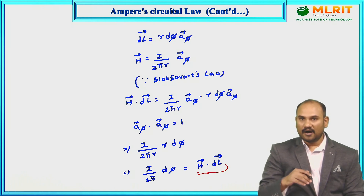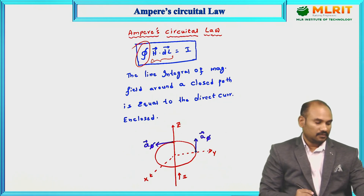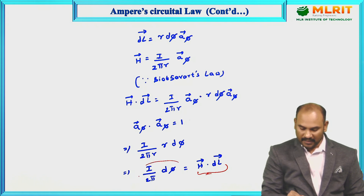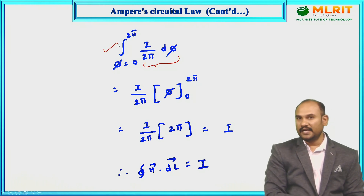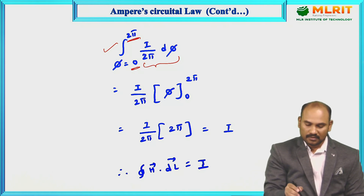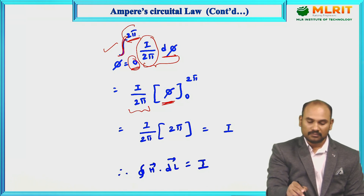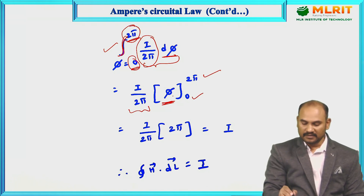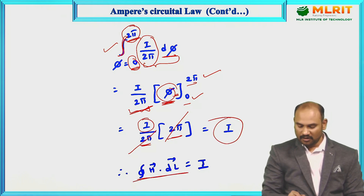The work does not end at H · dL — you must integrate it. The expression for H · dL is (I / 2π) dφ. Integrating this as a line integral with limits 0 to 2π: I / 2π is constant, so take it outside. The integral of dφ from 0 to 2π equals 2π. So we get (I / 2π) × 2π — the 2π cancels — and what remains is I.